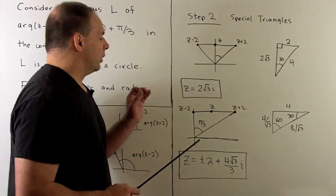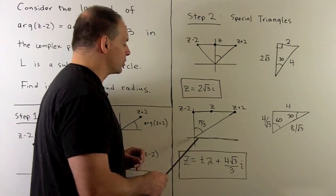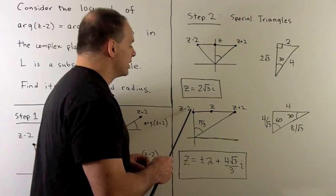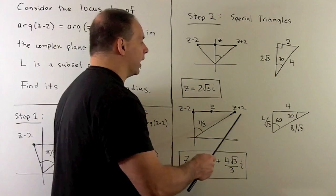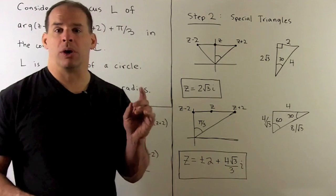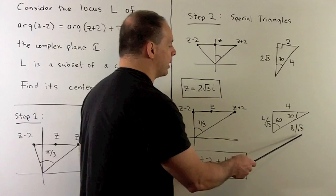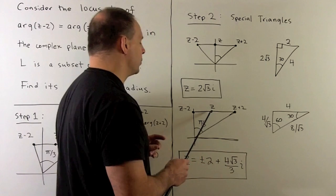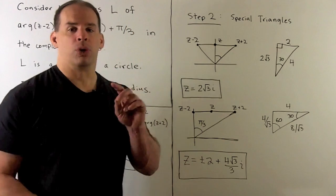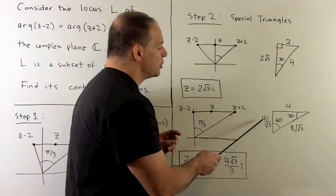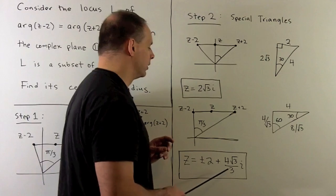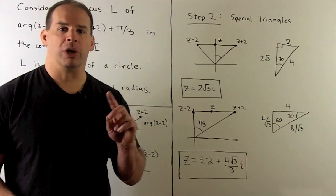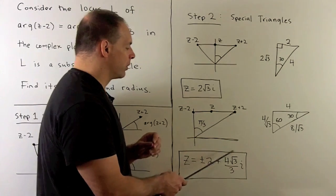For the extremes, I'll put z minus 2 on the imaginary axis. We again have a 30-60-90 triangle, with the top leg of length 4 being the long leg. To go from the long leg to the short leg, we divide by root 3, then multiply by 2 to get the hypotenuse. The real part of z is not 4 but half of that, since we have the midpoint. So we get 2 + (4√3/3)i. For the other extreme with the triangle pointing the other way, the same answer but with the real part negated: −2 + (4√3/3)i. So we now have three points.